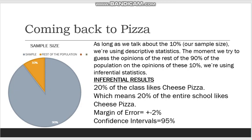For example, let's say Pizza Hut finds out that 20% of your class likes cheese pizza. So if we extrapolate this conclusion, we find that 20% of the entire population — not just your class or the rest of the school, but both combined — likes cheese pizza. Of course, it won't be completely accurate, so we say that there is a margin of error of plus or minus 2%, which basically means that the percentage of people who like cheese pizza in your school lies somewhere between 18% and 22%. We'll talk about margin of error in another video.